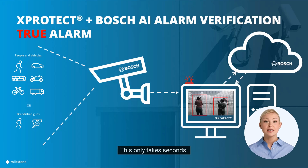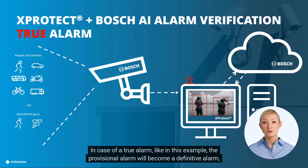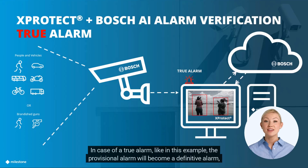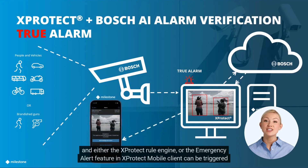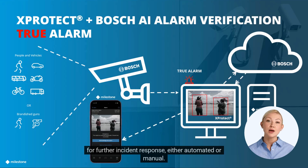This only takes seconds. In case of a true alarm, like in this example, the provisional alarm will become a definitive alarm, and either the XProtect rule engine, or the emergency alert feature, an XProtect mobile client, can be triggered for further incident response, either automated or manual.